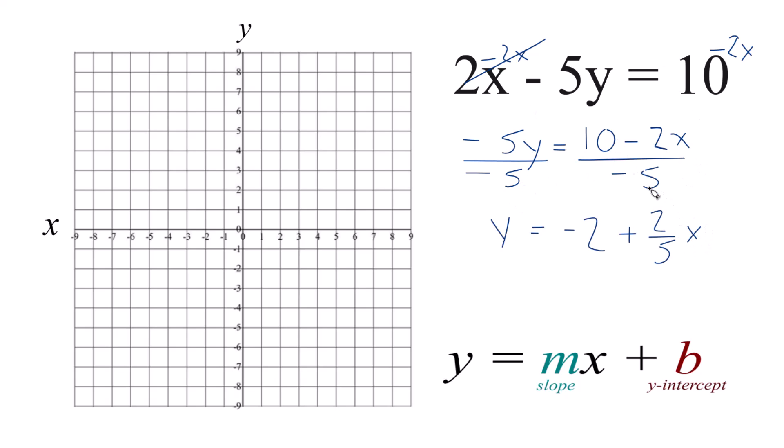So 10 divided by negative 5, that's negative 2. And then negative 2 over negative 5, that's just positive 2 over 5x. Then I want to put the x first so it matches slope intercept form.